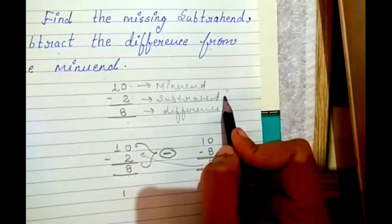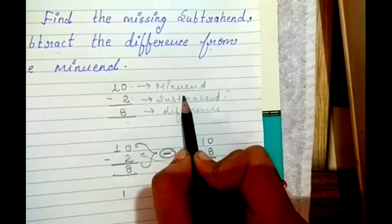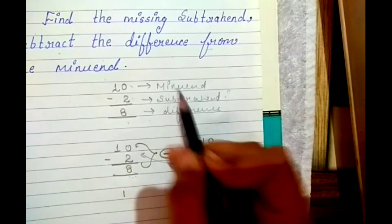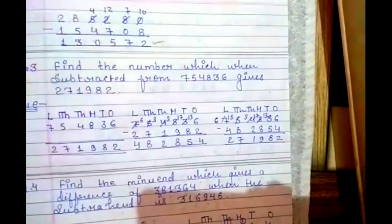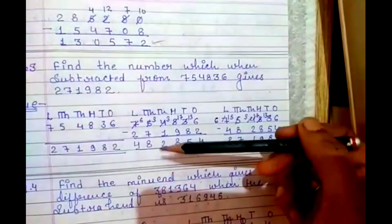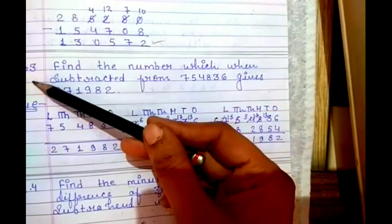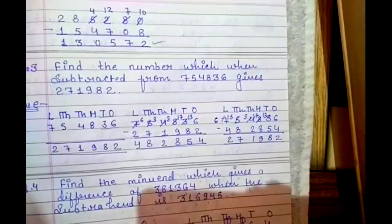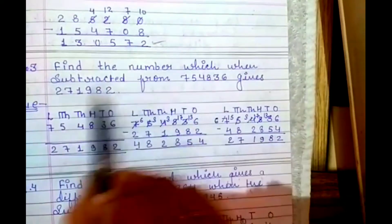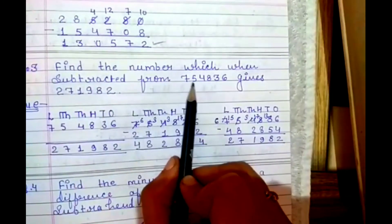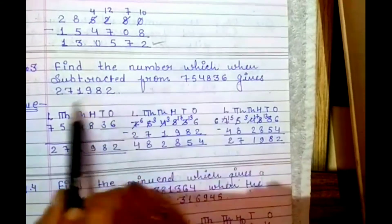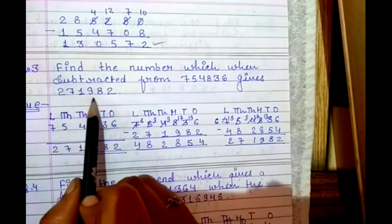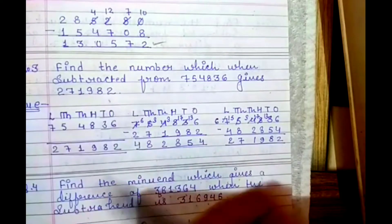और जब भी अपन को subtrahend find करना होता है, तो क्या करते हैं - minuend में से जो भी difference होता है, उसको minus कर देते हैं। Students, आपकी exercise 3.4 का question number 3 है। उसमें क्या दिया हुआ है: